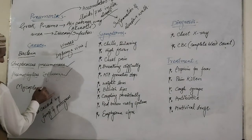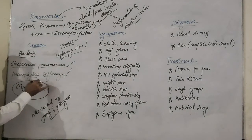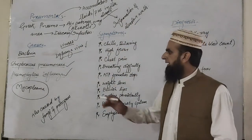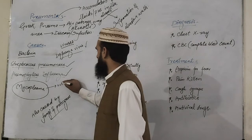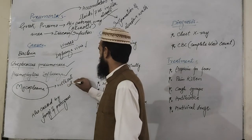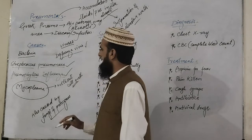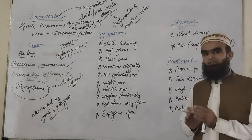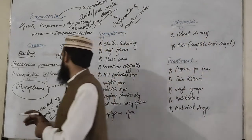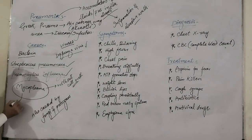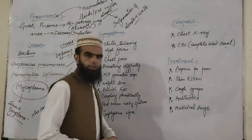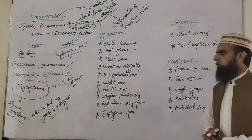Another causative agent is Mycoplasma. Mycoplasma is basically a kind of bacteria that has no cell wall — they are naked, without a cell wall. It is said that when Mycoplasma is involved in the cause of pneumonia, it causes much greater severity. In the case of Mycoplasma, very severe symptoms of pneumonia appear.